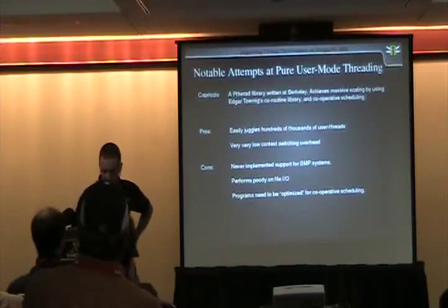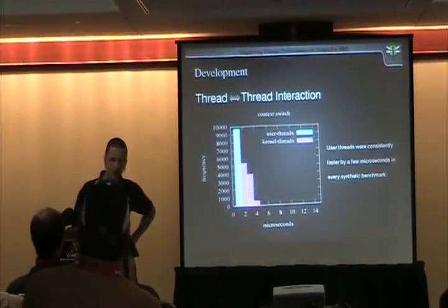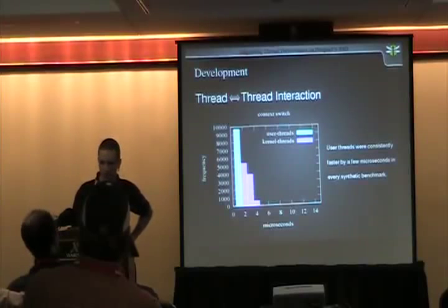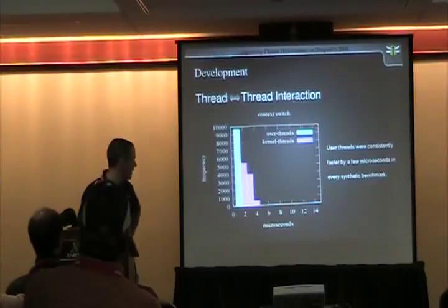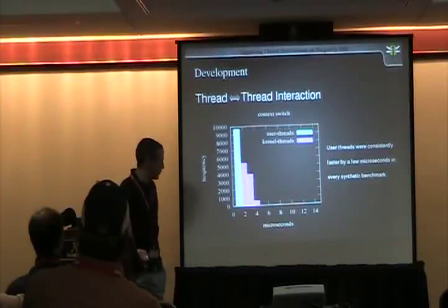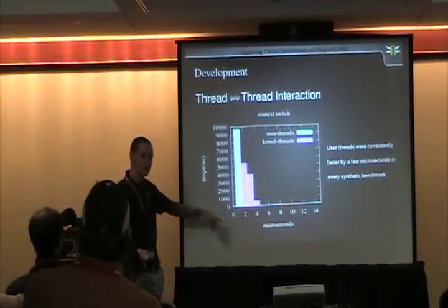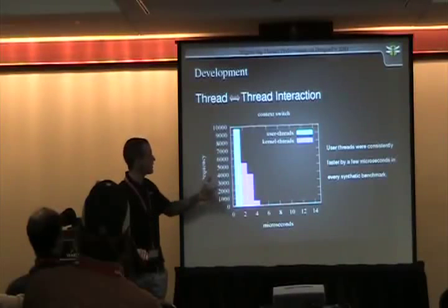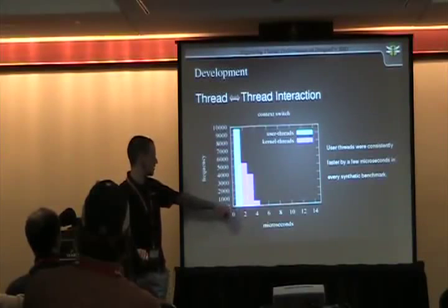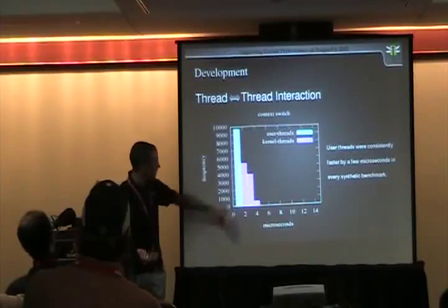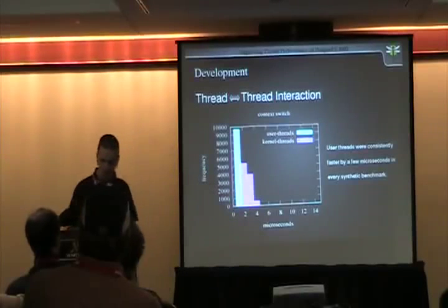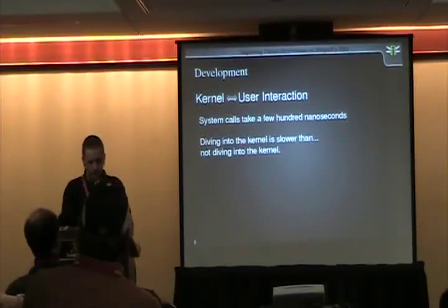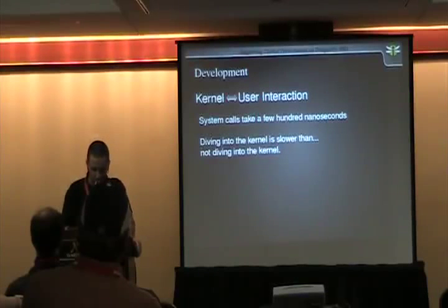I decided to go ahead anyway, doing lots of micro-benchmarks to verify that the concepts were sound. In a weighted histogram of 10,000 context switches, all user thread context switches landed in the sub-one-microsecond range, while kernel threads were slightly slower depending on conditions — but not dramatically so. Diving into the kernel and back does take longer than staying in user-land, though the advantage isn't gargantuan.